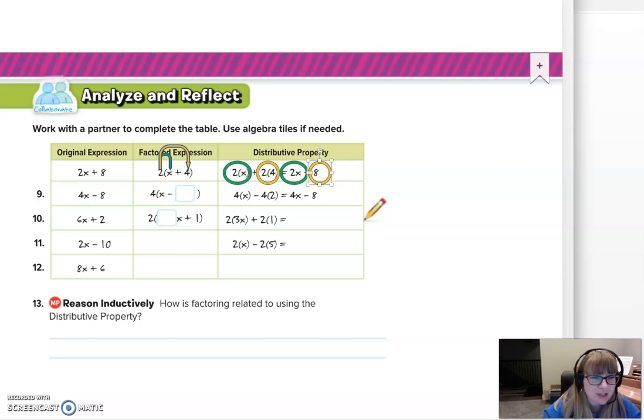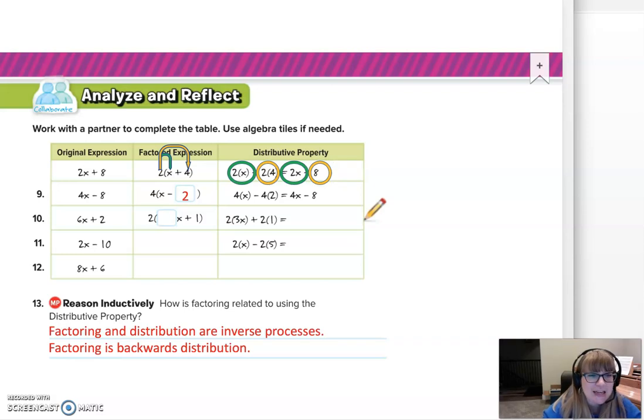Okay. We're back. Take a look at number 9. Number 9, 4x minus 8. When I factor that, I have 4 times x minus 2. And we can see when we redistribute that, that we end up with that original expression again. The rest of it is up to you for your practice problems. How are they related? Well, factoring and distribution are just inverse processes. Factoring is backwards distribution. So if you know how to distribute, we're trying to undistribute or factor.